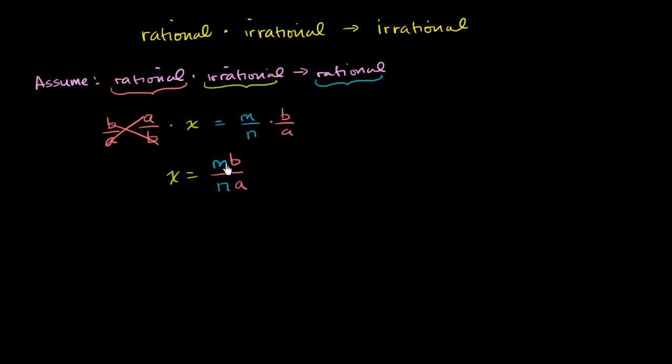So why is this interesting? Well, m is an integer, b is an integer. So this whole numerator is an integer. And then this whole denominator is some integer. So I've just, right over here, I have a ratio of two integers. So I've just expressed what we assumed to be an irrational number. I've just expressed it as the ratio of two integers.